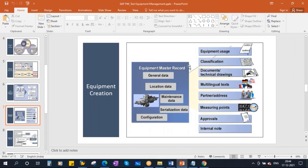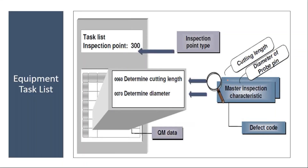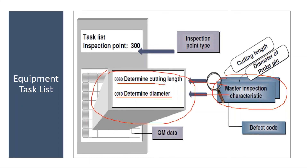Now the next step is the task list. Before creating the task list, we need to have the MICs — Master Inspection Characteristics — in the system. These are the parameters checked during the calibration of the equipment. The QM team creates these MICs.